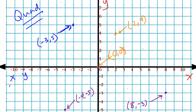Let's try one more. Let's graph the ordered pair negative 5 comma 0. The x-coordinate is negative 5, so starting at the origin, we'll move to the left 5 units. Because the y-coordinate is 0, that simply means that we will move 0 spaces in the vertical direction. So this would be negative 5 comma 0.